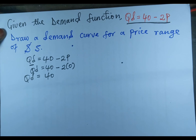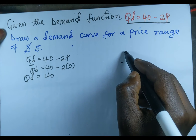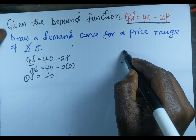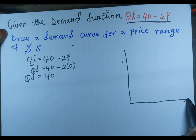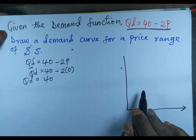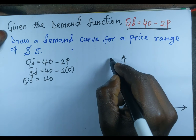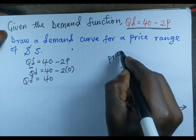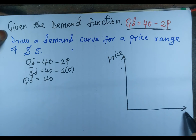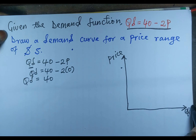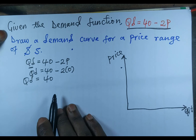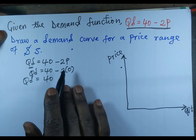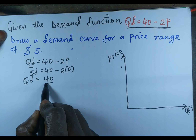Let me put it on the graph so you can easily understand. This is the price axis and this is the quantity axis — Qd stands for quantity demanded. So we have our first point on the quantity axis.